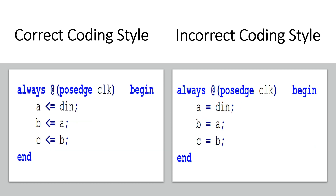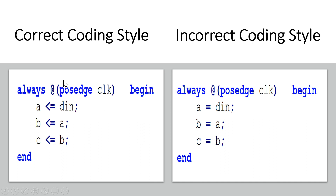Friends, this part is the crux of our video — please pay a bit more attention. I have considered two codes to illustrate why we should not use blocking assignment statements inside sequential blocks. The correct coding style uses non-blocking assignment statements, and the intention of this code is to infer three flip-flops: the input of the first flip-flop is din and its output is a; a goes as input to the second flip-flop whose output is b; and b goes as input to the third flip-flop whose output is c. Even if we place these three statements in any order, the synthesis results will be the same.